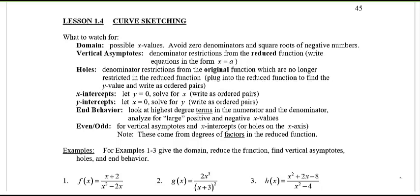So what do we need to watch for? Well you should always be thinking what's the domain, the possible values of x. Remember that if there are denominators you've got to make sure they are not equal to zero, those non-permissible values. If you have square roots make sure the stuff underneath the square root can't be negative.